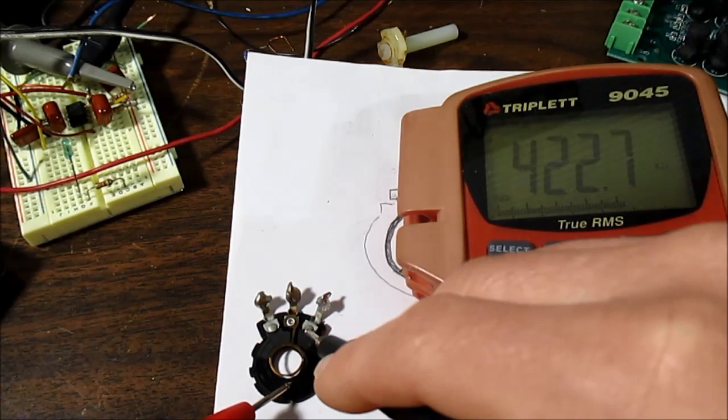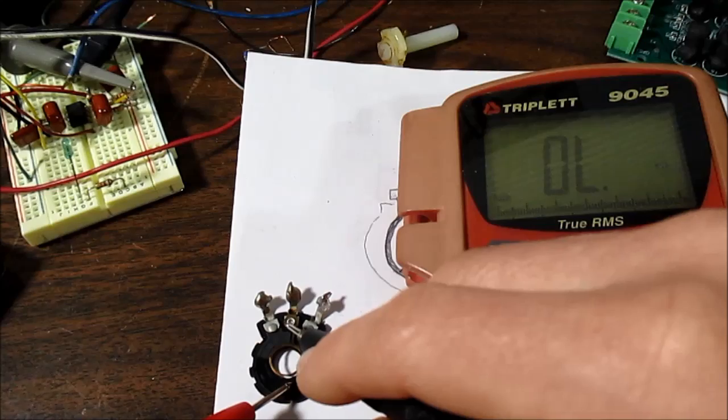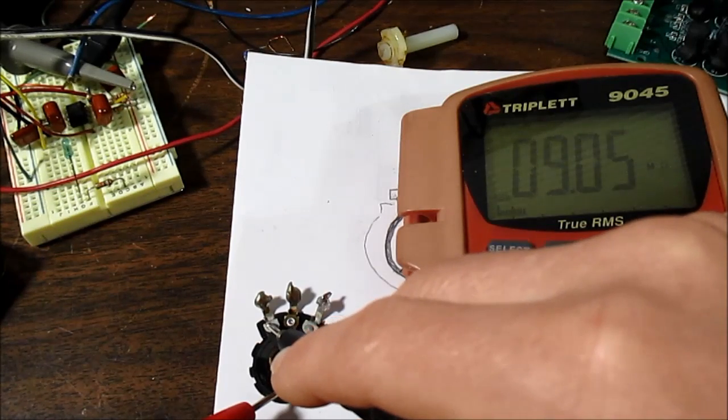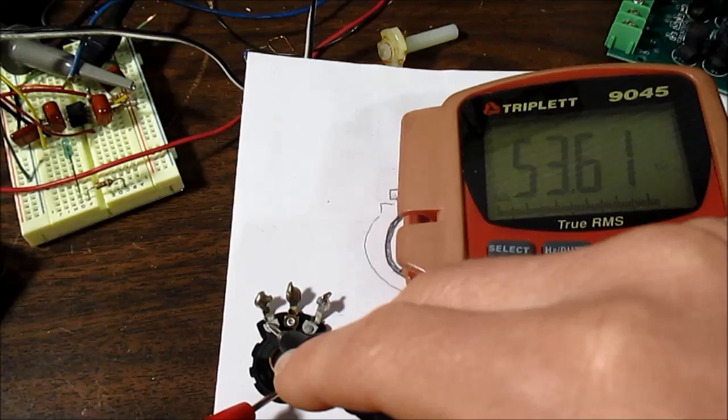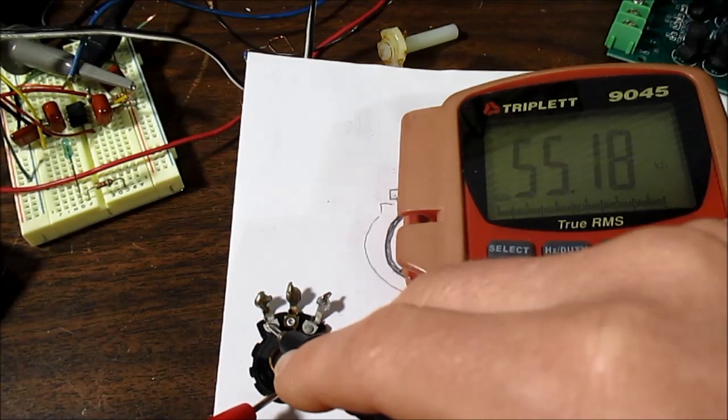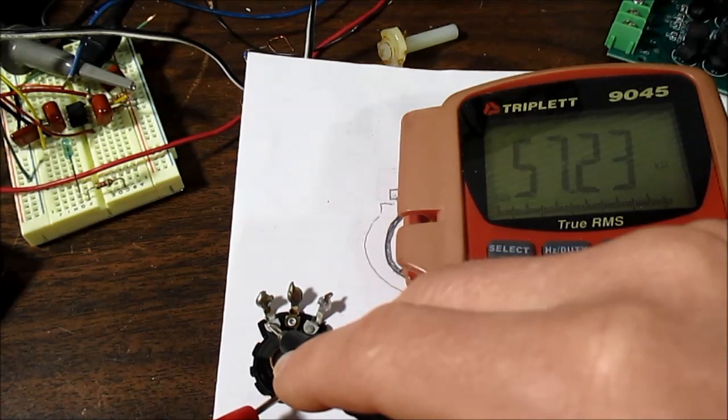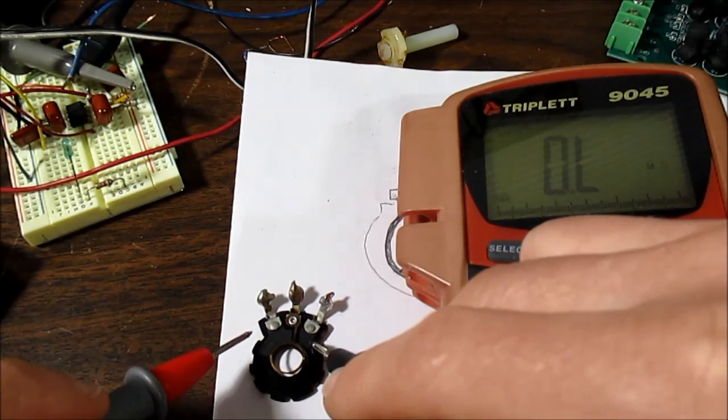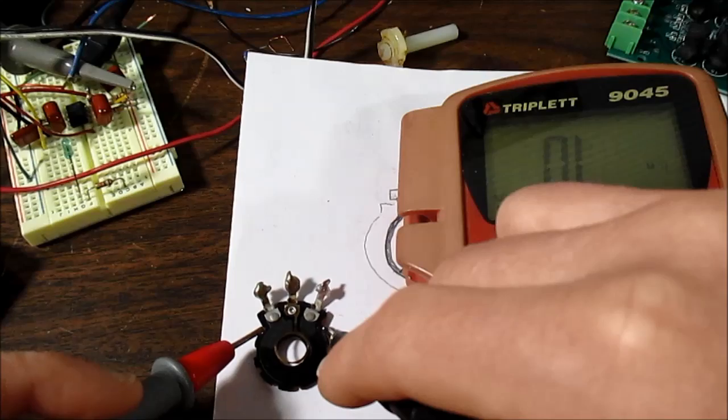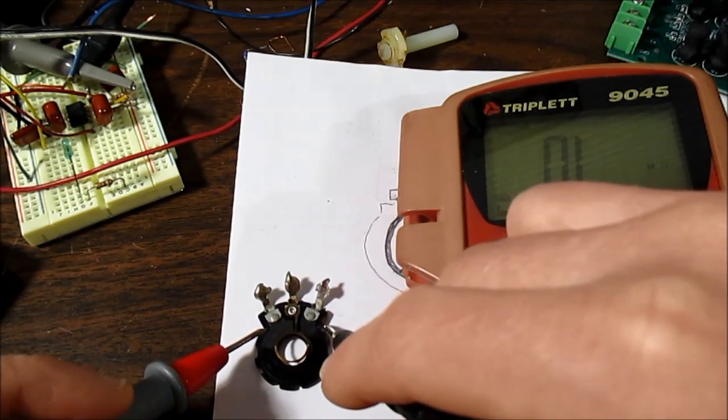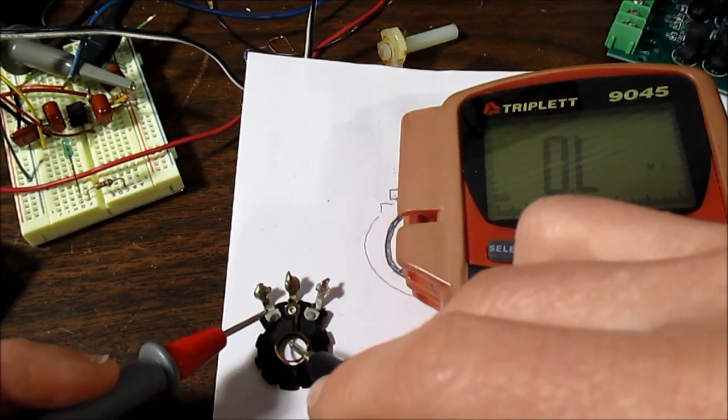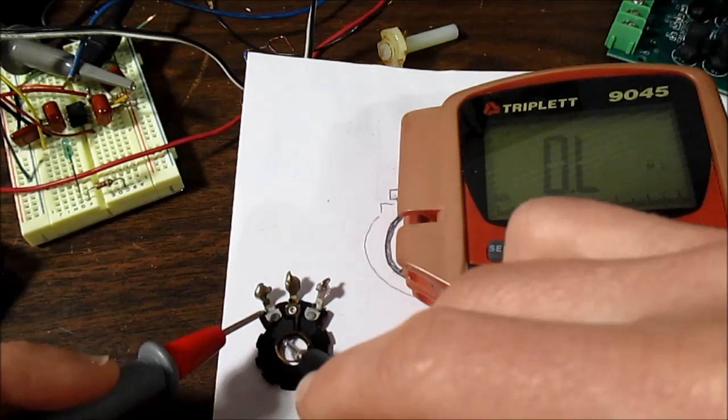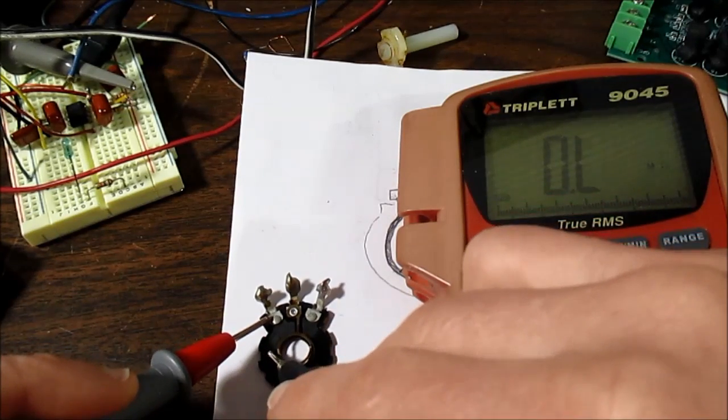422, not a lot of difference. So let me measure the left side to the center. Now it drops to 53. Well, this is an audio taper or audio log as they call it - it's a logarithmic type of potentiometer.